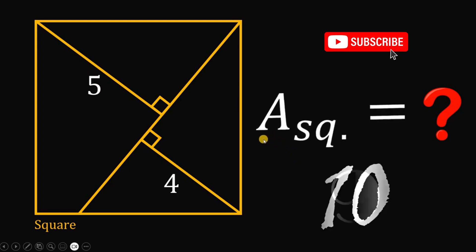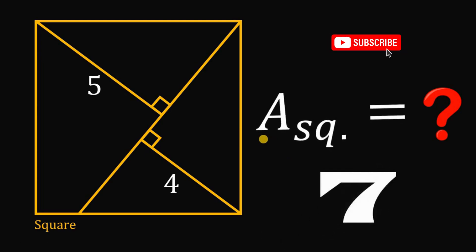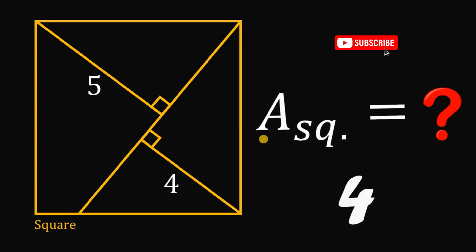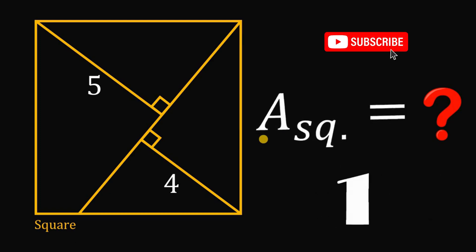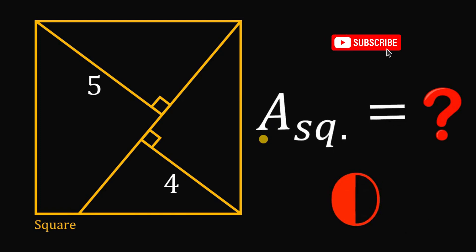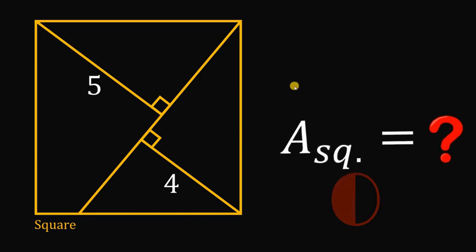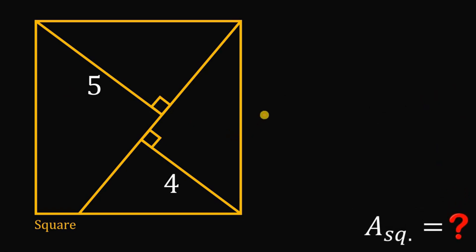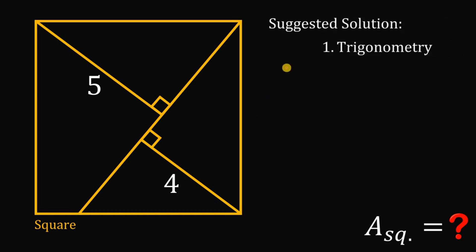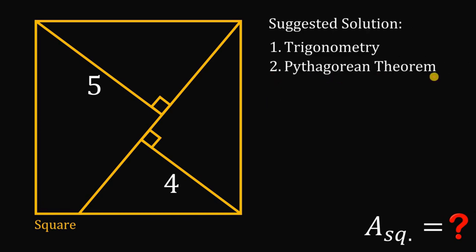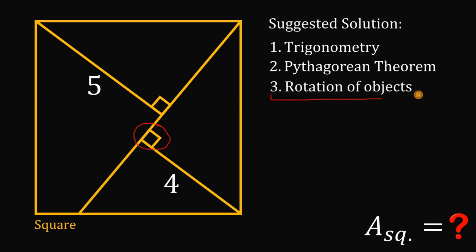You can pause this video if you want to give this problem a try. Now let's answer this question together. I have three suggested solutions to answer this kind of question. The first one, we can use trigonometry. The second one is we can use the Pythagorean theorem, because we have a lot of right triangles. And the third one, my favorite, is the rotation of objects.